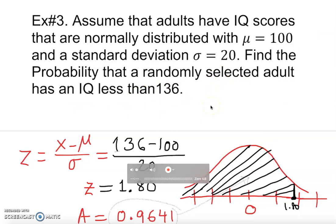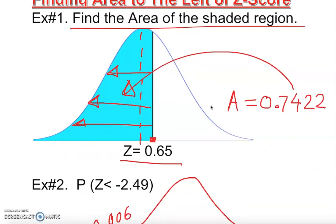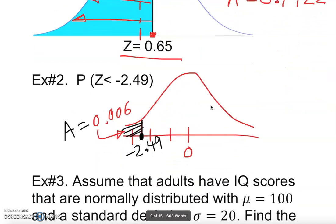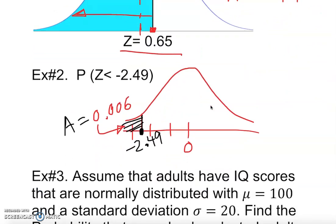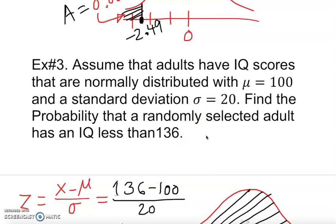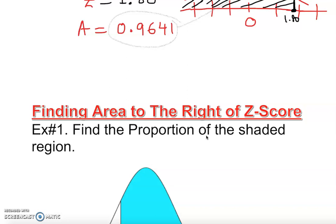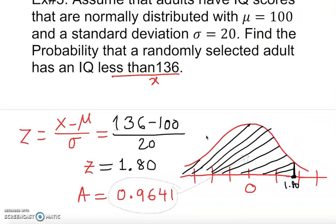I hope you understand how to find the area to the left of z in at least three different ways: given a normal curve with shading, given just a z-score like in example two, and given a word problem that requires converting to a z-score first. Plug into the formula, convert to z-score, go to the z-table, and read off the answer. Thank you so much.